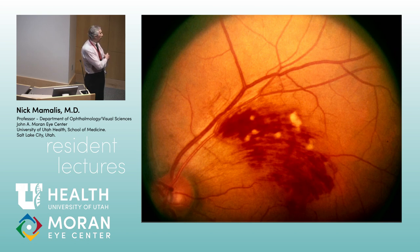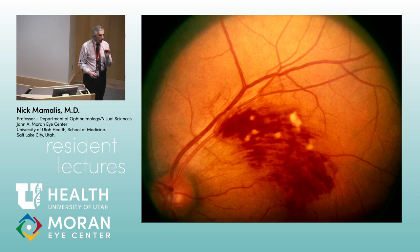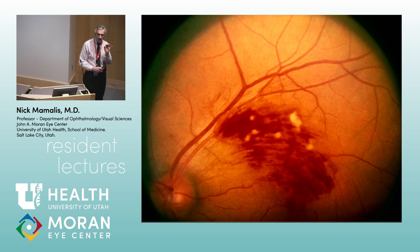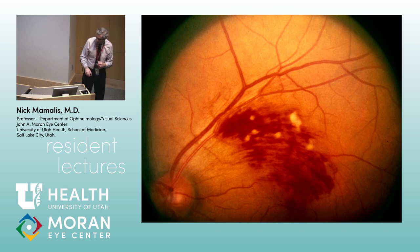This is a branch retinal vein occlusion. The most common cause is arterial sclerosis — you can see silver wiring of the artery. Right where the venule crosses over the artery, you get thinning and sausaging of that vein, then eventual occlusion. So it's usually at the arteriovenous crossing point where the sclerotic artery compresses the vein.